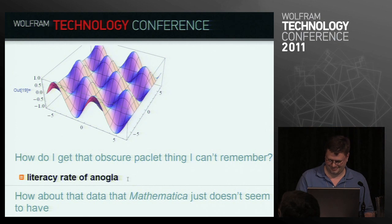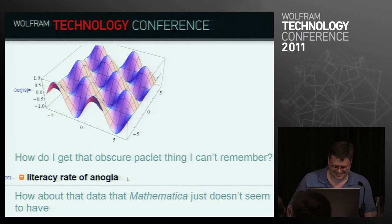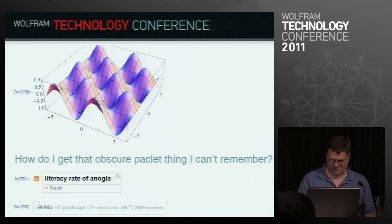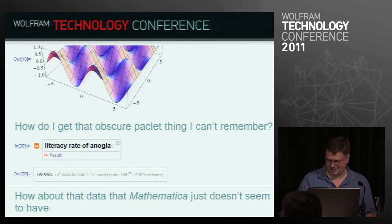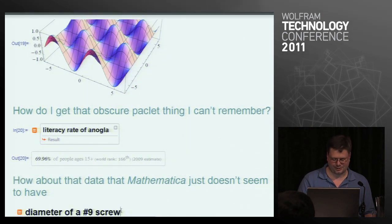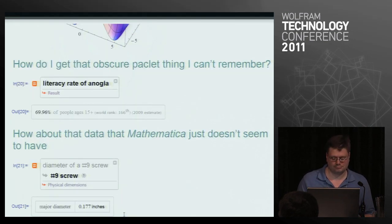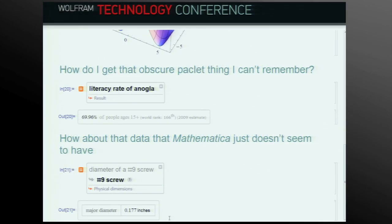It'll even correct the spelling — who are you to judge? You can get data which Mathematica doesn't even have direct access to. Mathematica doesn't know anything about number nine screws, but we can get it off Wolfram Alpha. Wolfram Alpha has a huge amount of databases that Mathematica didn't have direct access to — now it does. All of that is available to you for the simple cost of a Mathematica license.